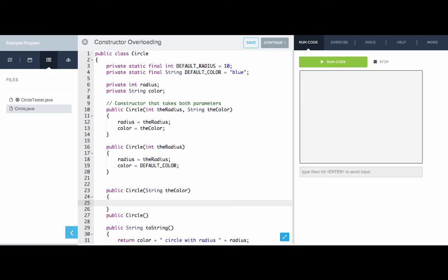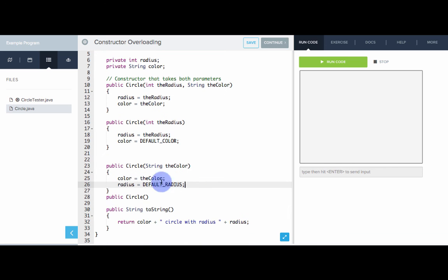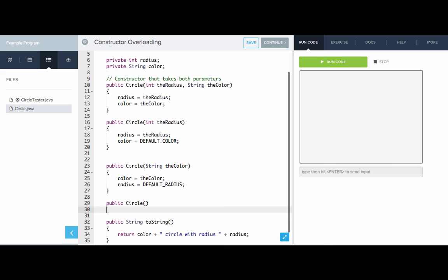In this constructor, we want to set the color to the color provided. And we want to set the radius to the default radius. And lastly, with the no-argument constructor, whoever called this one just wants the default values. They don't want to specify either the radius or the color in this circle. So, we'll set the radius equal to the default radius. And the color equal to the default color. Great.